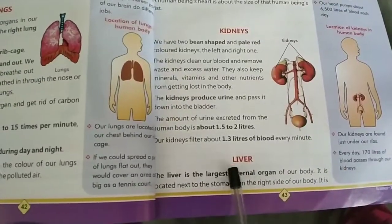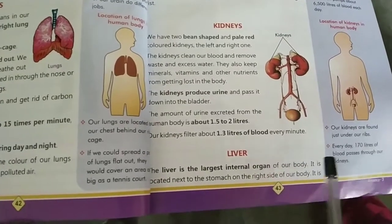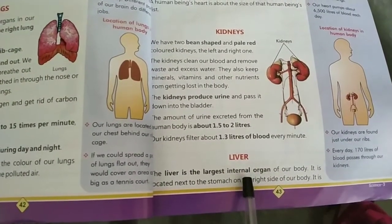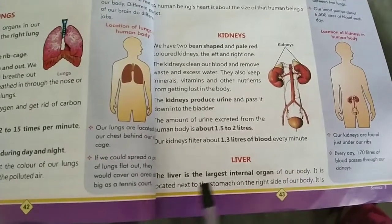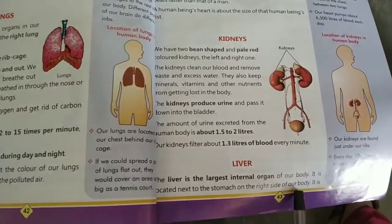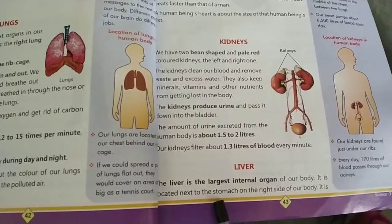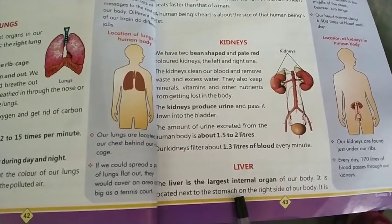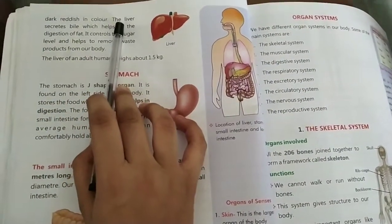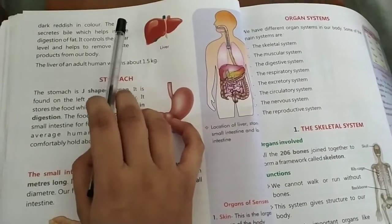Next is liver. The liver is the largest internal organ of our body. हमारा liver हमारे body का सबसे बड़ा internal organ है। It is located next to the stomach on the right side of our body. हमारा liver हमारे stomach के ठीक बगल में right side में present होता है। It is dark reddish in color. हमारा liver dark red color का होता है.